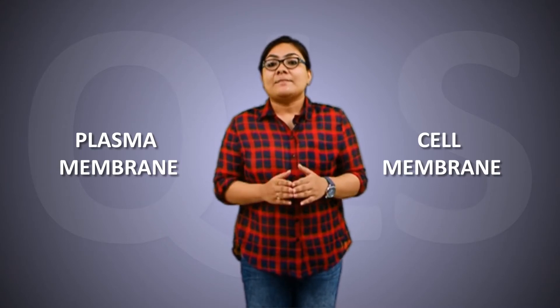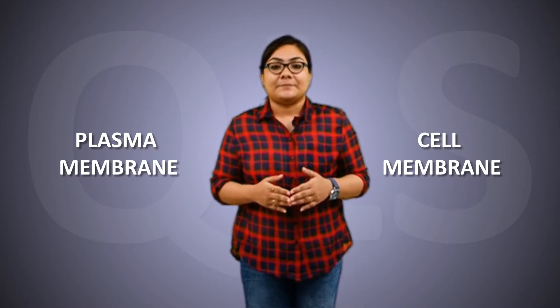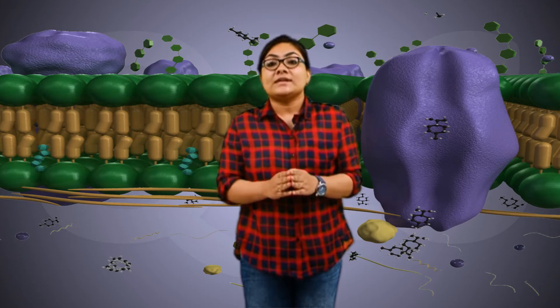Now let's talk about plasma membrane, or cell membrane — these two words are actually interchangeable. Hum plasma membrane ko cell membrane bhi keh sakte hain aur cell membrane ko plasma membrane bhi. Plasma membrane is the outer covering of a cell jo cell ke andar ke components ko cell ke bahar ke components se separate karta hai. Jaise humare ghar ka darwaza, waise hi cell membrane allows the movement of materials in and out of the cell. Similarly, plasma membrane also prevents the entry of some substances, thus it is called a selectively permeable membrane.